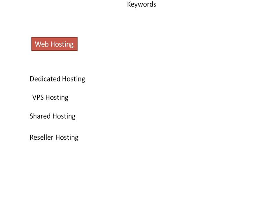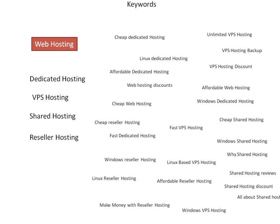The idea was that my main keyword was going to be web hosting, and my secondary keywords were dedicated hosting, VPS hosting, shared hosting, and reseller hosting. I then went out and found supporting keywords to create articles for, to help rank those secondary and primary keywords. I came up with topics like cheap dedicated hosting, unlimited VPS hosting, affordable web hosting, fast VPS hosting, Windows reseller hosting, make money with reseller hosting, all about shared hosting, and many more. We're going to look at exactly how to build the most optimum interlinking structure for our blogs and keep everything very related to each other.